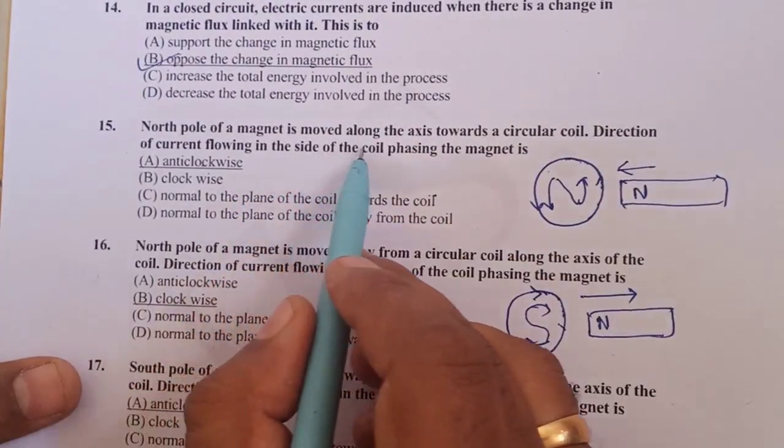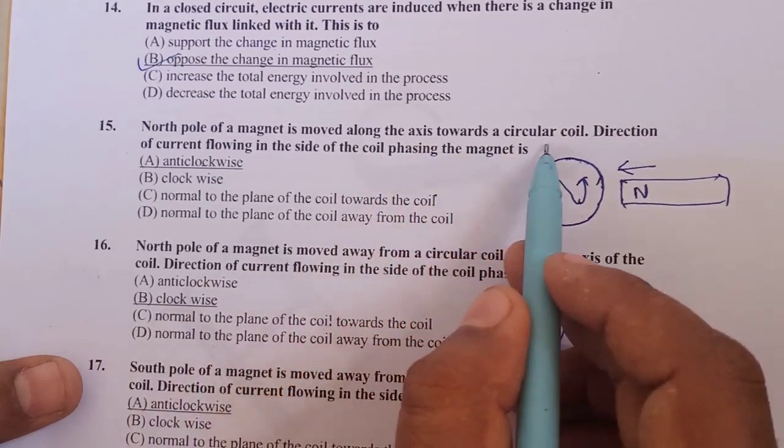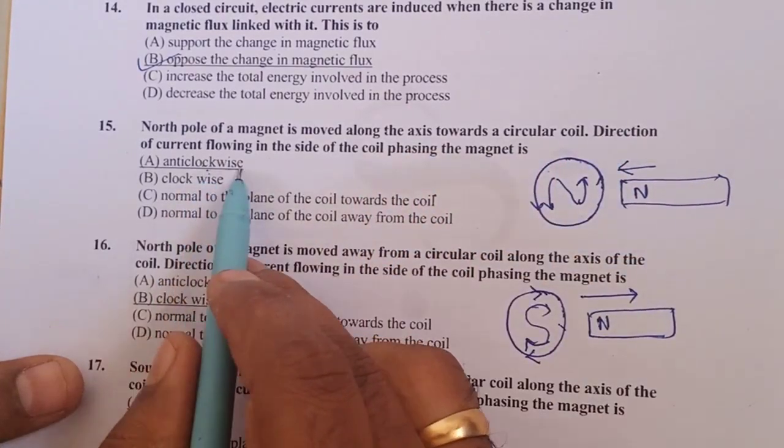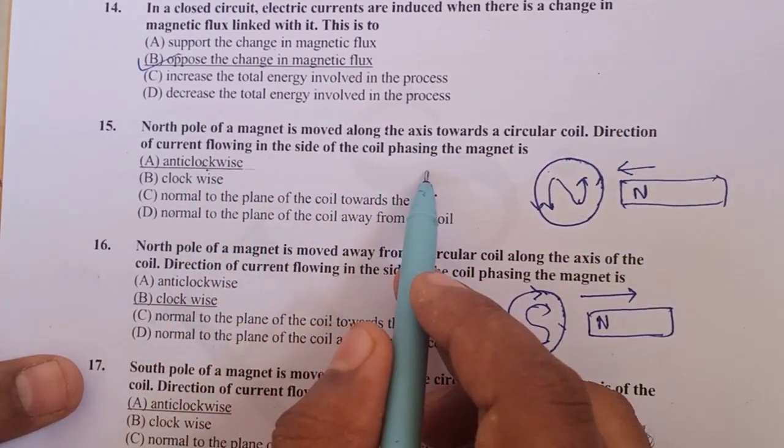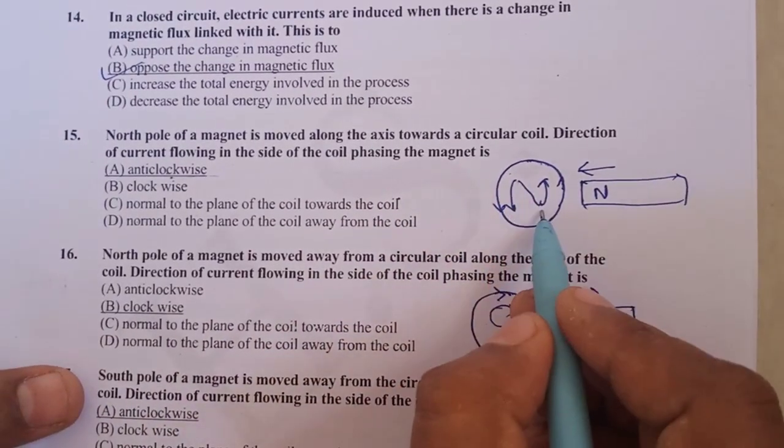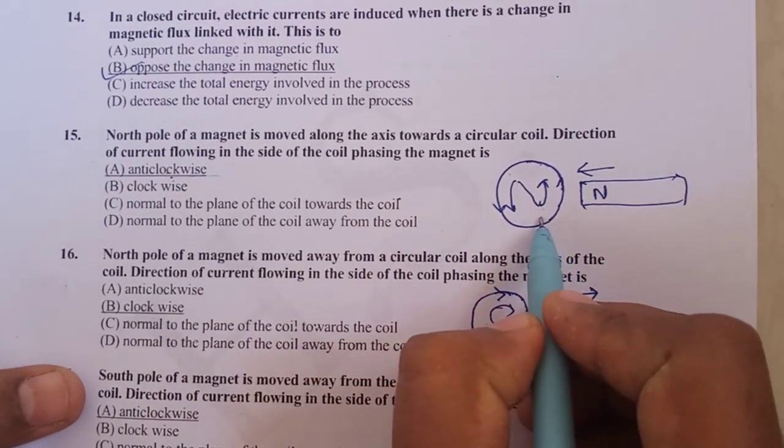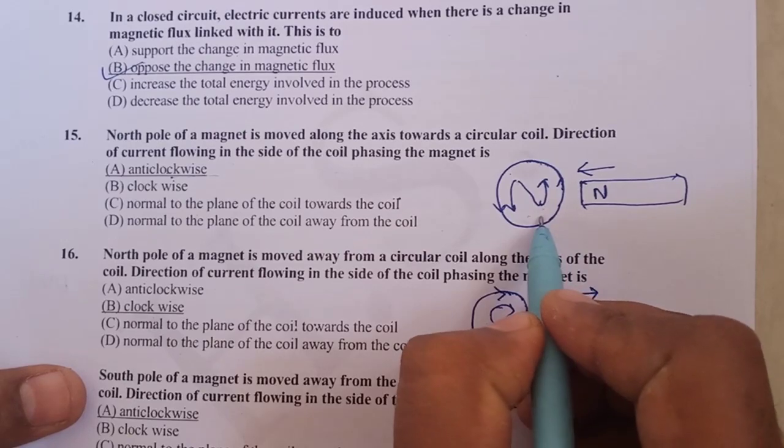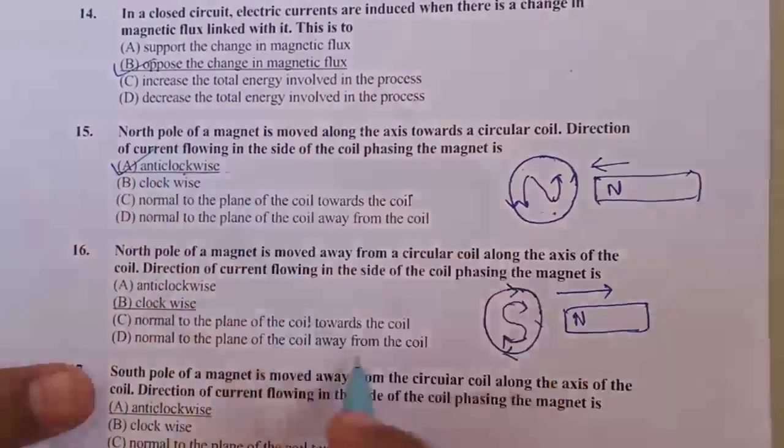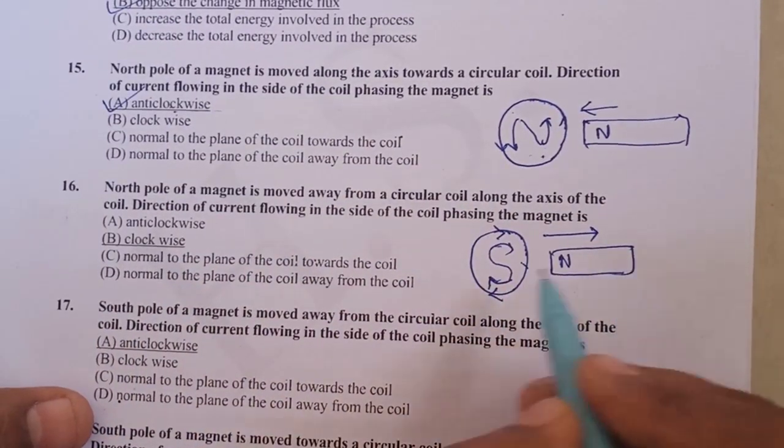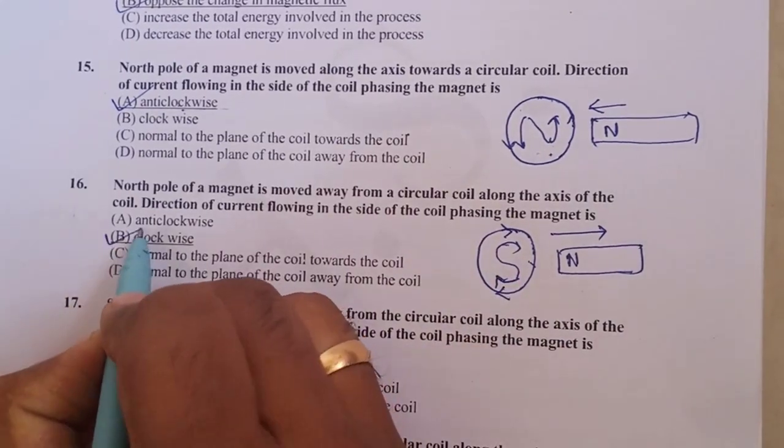North pole of the magnet moved along the axis towards the circular coil. The direction of current flowing inside the coil facing the magnet is anticlockwise direction, so as to oppose the change that produced it. If the north pole is taken away, then it will produce the current in a clockwise direction.